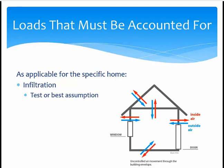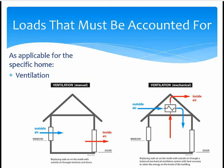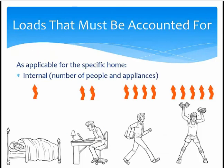The most precise way to get the infiltration load is to measure it directly using a blower door. But sometimes that's not possible — for example, if the home's not built yet. In that case, Manual J has some default values that can be used based on construction assumptions. Next is the ventilation load. Ventilation is simply replacing the inside air with outside air, which can be done manually, like by opening windows, or mechanically, like with a ventilation system. The diagram shows both ventilation done manually on the left and ventilation mechanically on the right.